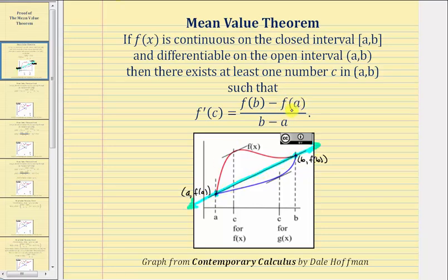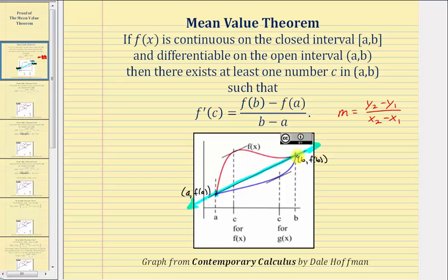Again, this quotient here is just the slope formula — y sub two minus y sub one divided by x sub two minus x sub one — using function notation. So the mean value theorem tells us there's some x value equal to c in the open interval from a to b, where the slope of the tangent line given by f prime of c would be the same as the slope of the secant line passing through the two endpoints of the closed interval.